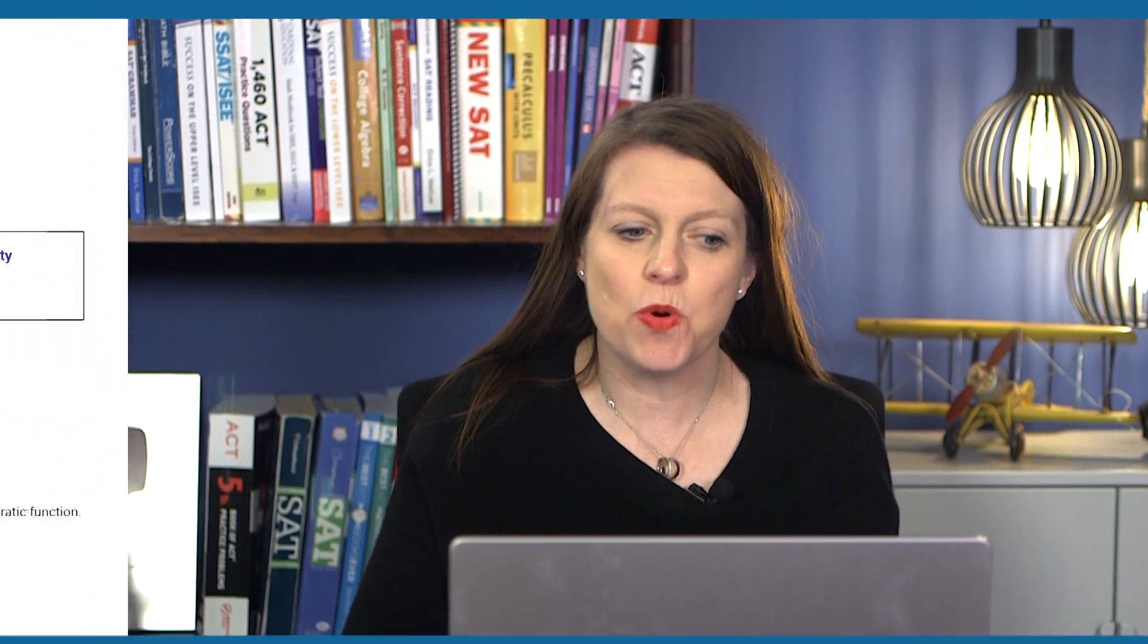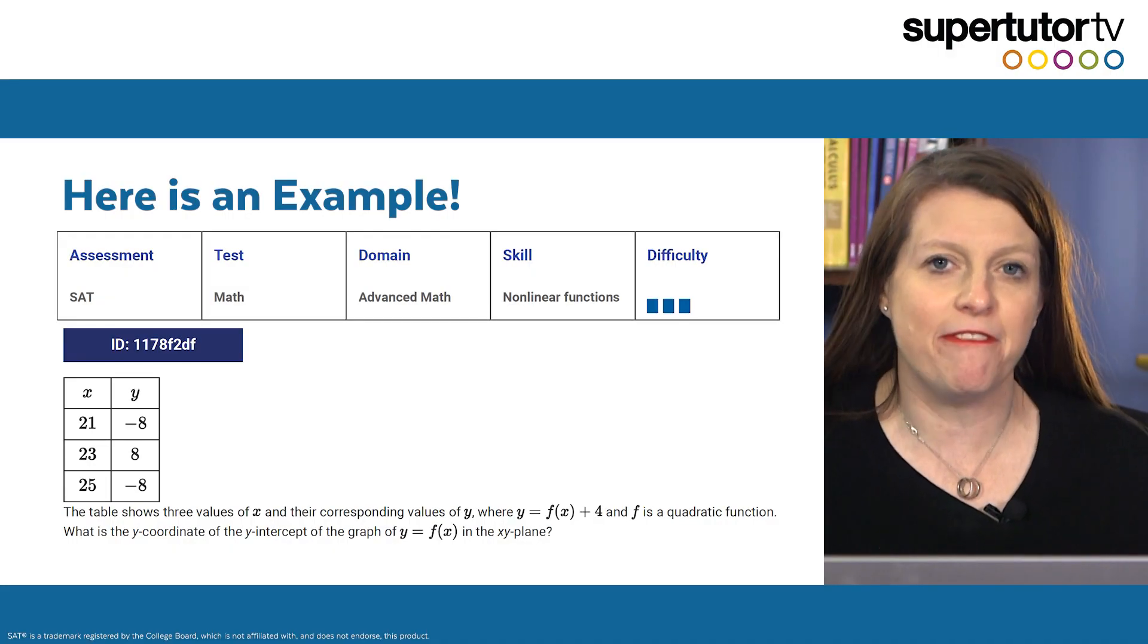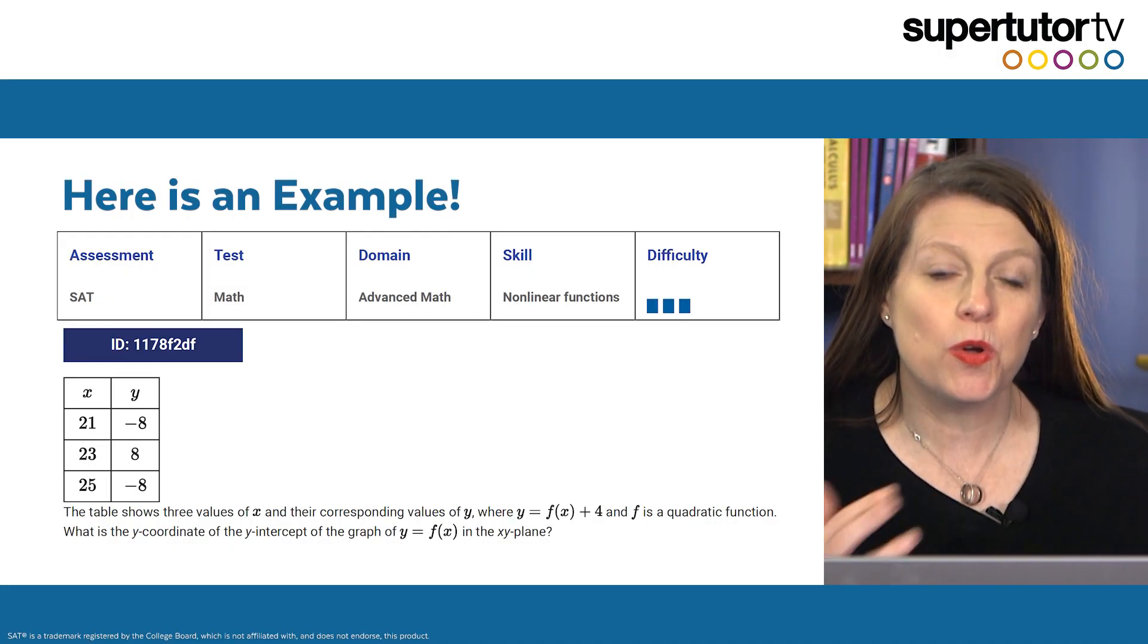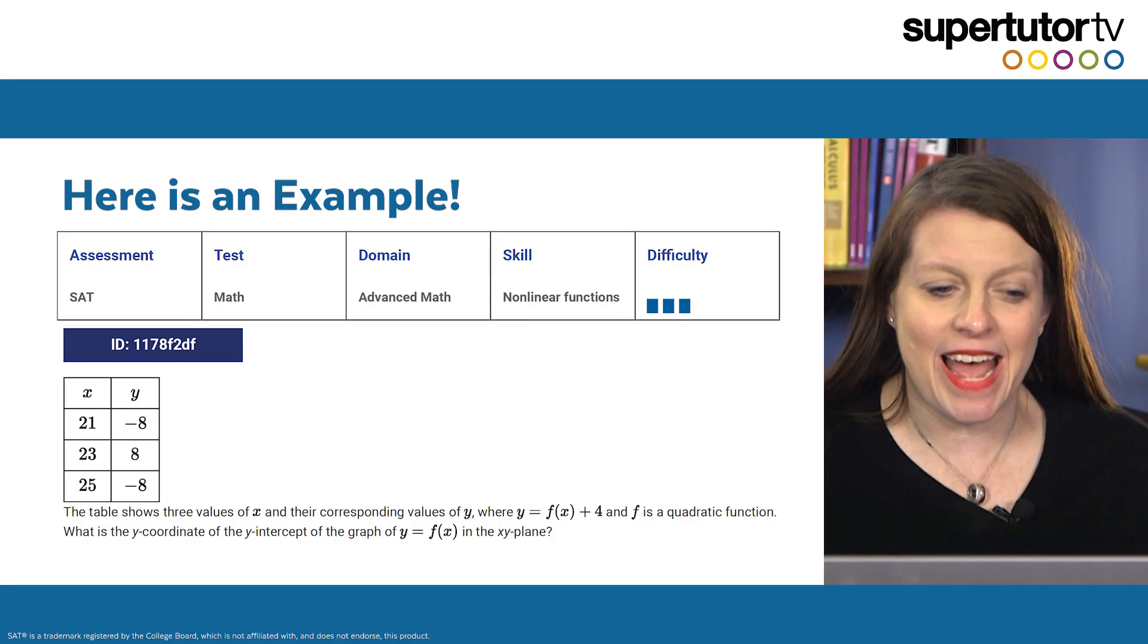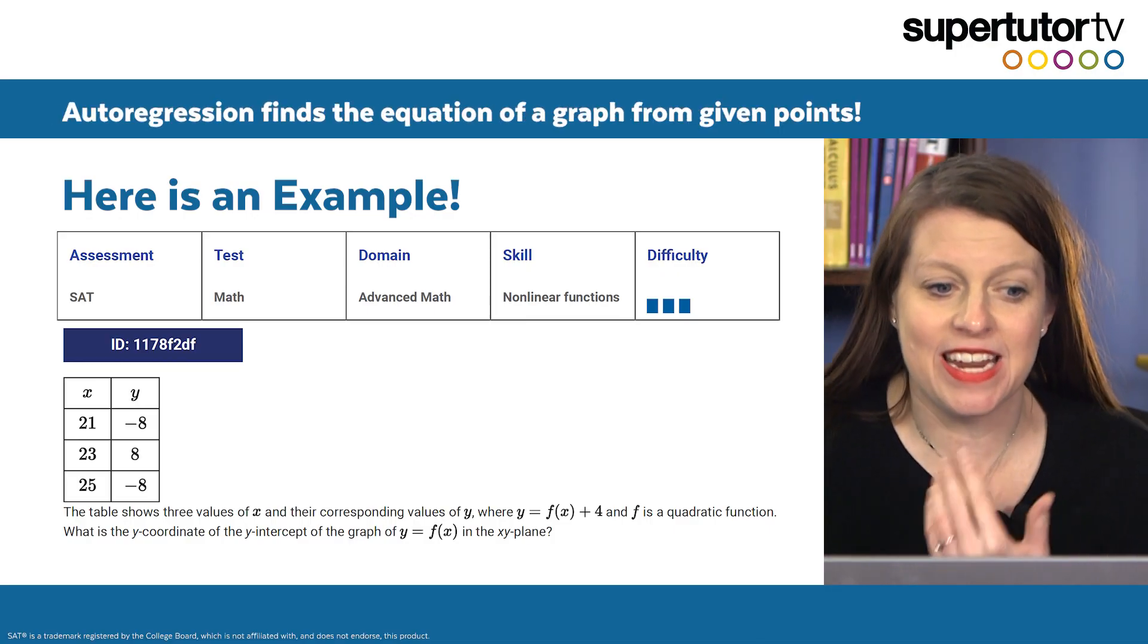So let's say that you're given some points for a graph and you need to figure out what the equation of that graph is. Desmos just added a feature called auto-regression and here's how it works.